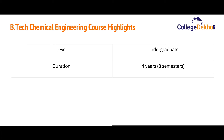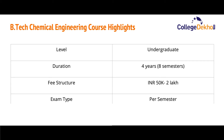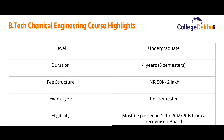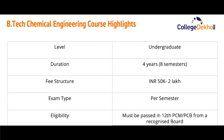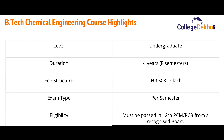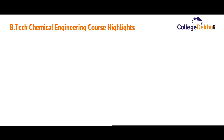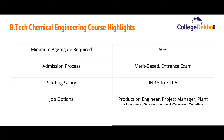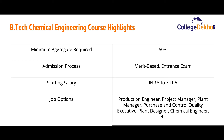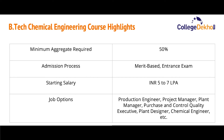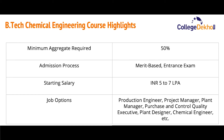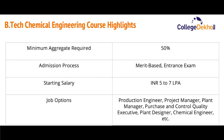The course is at the undergraduate level with a duration of four years divided into eight semesters. The fee structure ranges between 50,000 to 2 lakhs, and exams are conducted after each semester. For eligibility, candidates must have passed class 12th in PCM or PCB from a recognized board with a minimum aggregate of 50 to 60 percent. Admission is based on merit or an entrance exam. The starting salary ranges between 5 to 7 lakhs, with popular job options including production engineer, project manager, plant manager, quality control executive, plant designer, and chemical engineer.